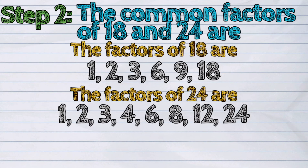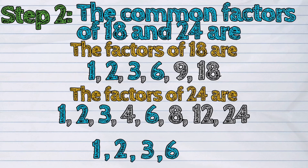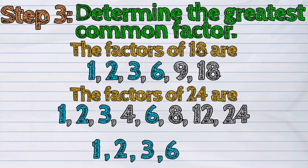Step 2: The common factors of 18 and 24 are: 1, 2, 3, and 6. Step 3: The greatest common factor is 6.